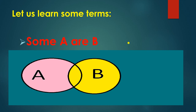The first term is 'some A R B'. The pink part belongs to A and the yellow part belongs to B. The part shown in A indicates that some A R belongs to B — this complete part means some A R belongs to the B part.